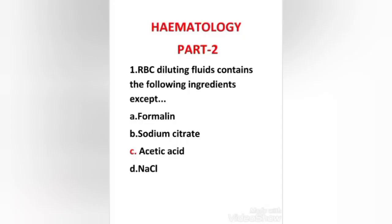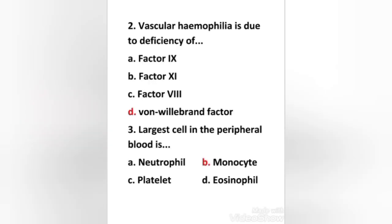First question: RBC diluting fluid contains the following ingredients except — formalin, sodium citrate, acetic acid, or sodium chloride? The right answer is option C: acetic acid.